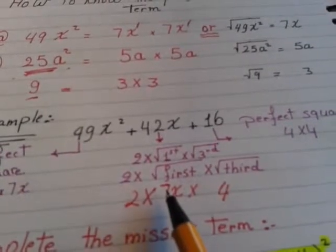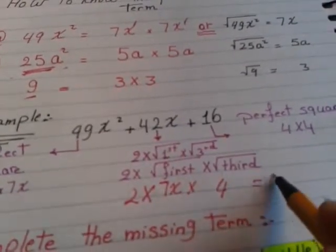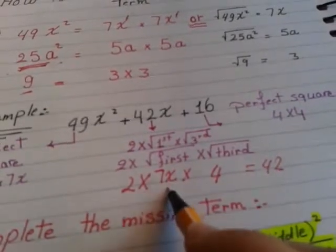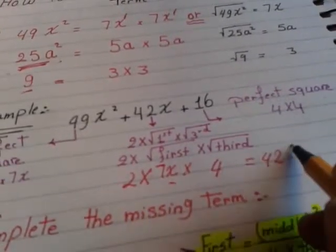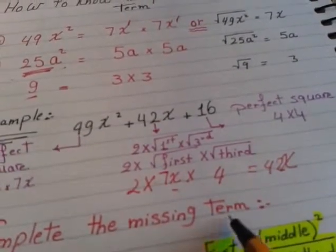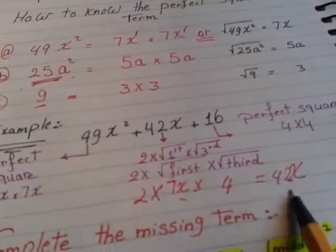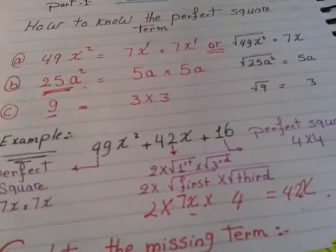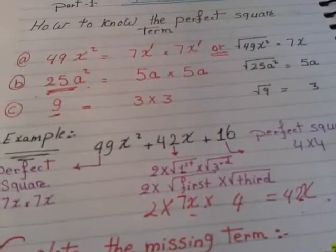So 2 times 7 is 14. 14 times 4 equals 42. And x. I don't have x. Drop x. Is the middle term 42x? Yes. So this is perfect square trinomial.